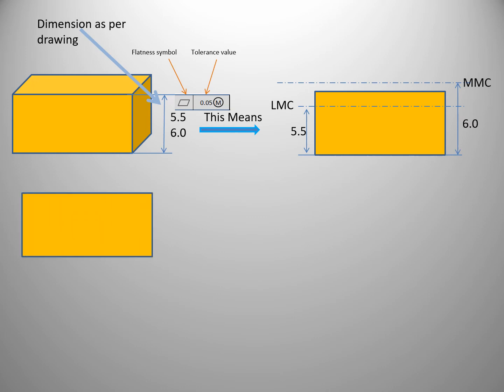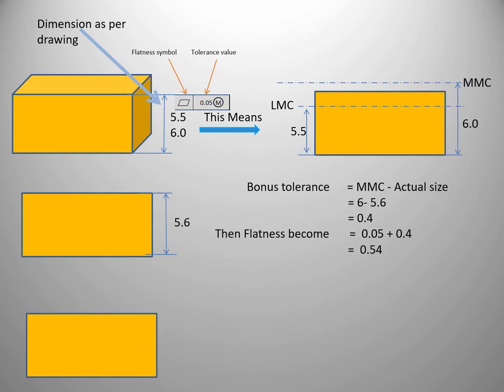Now consider that after manufacturing, the measured value of the component is 5.6. Now we can find the bonus tolerance. Here, bonus tolerance equals MMC minus actual size. The MMC of this component is 6 and the measured value is 5.6, so the bonus tolerance is 0.4. This bonus tolerance is added to the given GD&T tolerance of 0.5, giving a modified GD&T tolerance of 0.9.